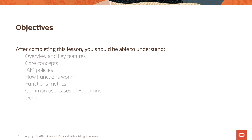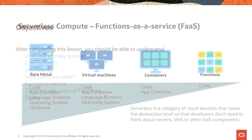We are going to discuss the IAM policies you need in OCI for working with functions, talk about what happens under the covers when you deploy and invoke a function, look at the metrics the service reports, look at some reference architectures for common use cases, and finally look at a demo of the Oracle Functions service in action. Let's get started.